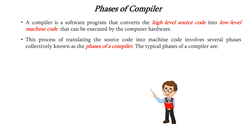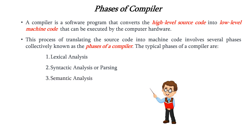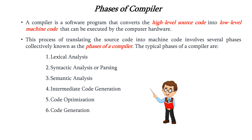There are six phases of compiler: namely lexical analysis, syntax analysis or parsing, semantic analysis, intermediate code generation, code optimization, and code generation.